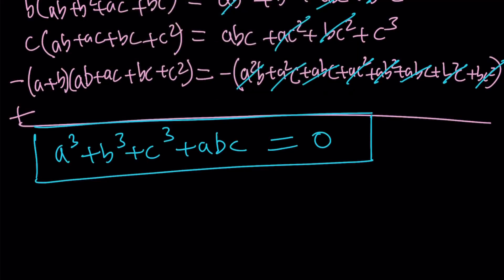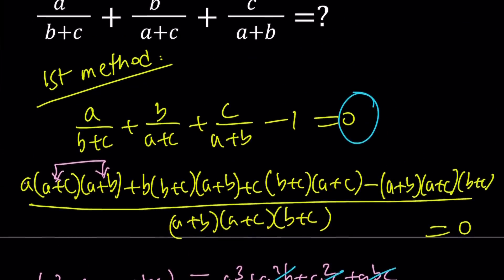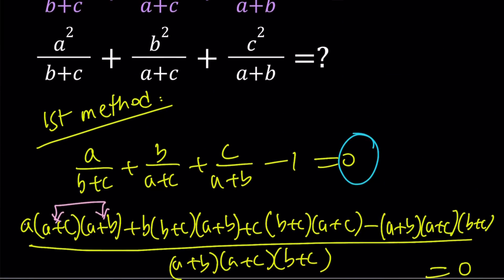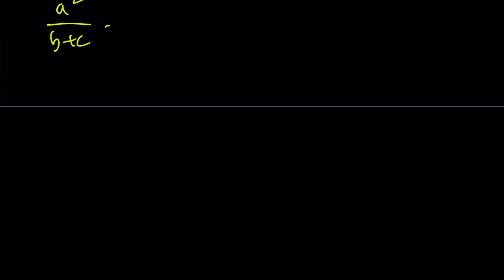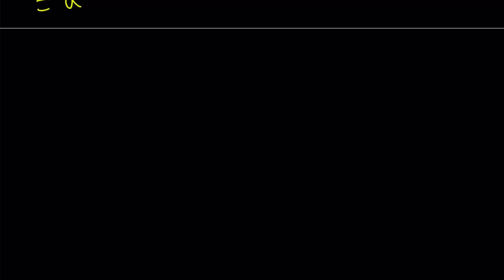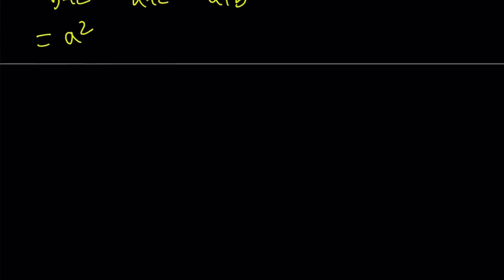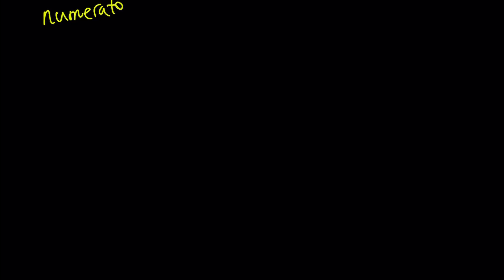Now let's go back to the expression we're trying to evaluate. Instead of a, b, c in the numerators, we have their squares. So let's simplify a²/(b+c) + b²/(a+c) + c²/(a+b). To simplify this I need to make a common denominator again. Focusing on the numerator, it's going to look like: a² times (a+c)(a+b), then b² times (b+c)(a+b), then c² times (a+c)(b+c).